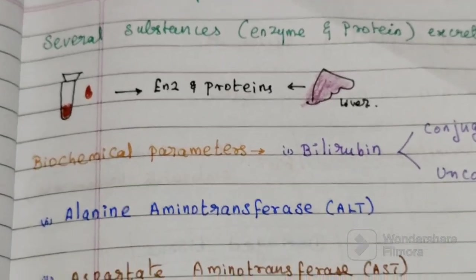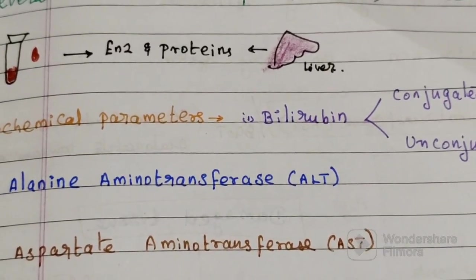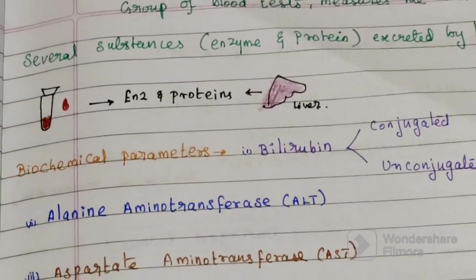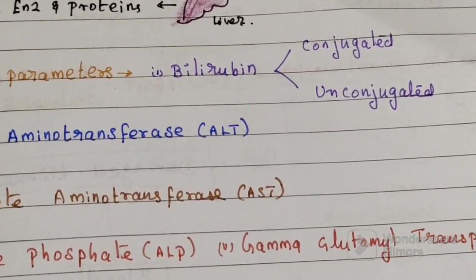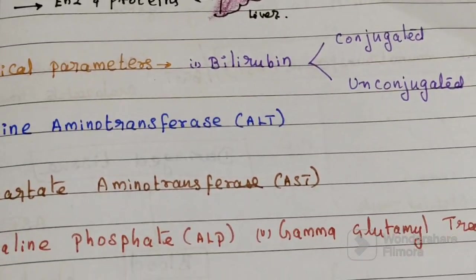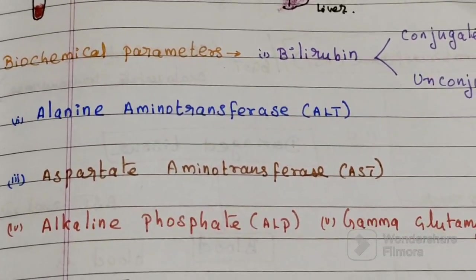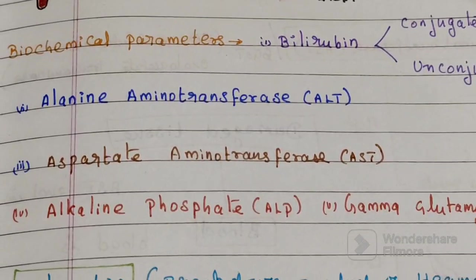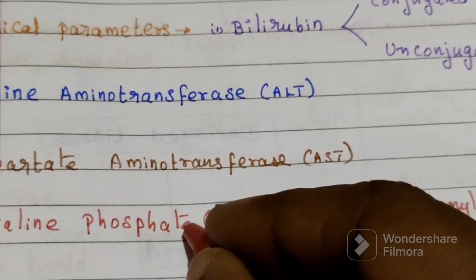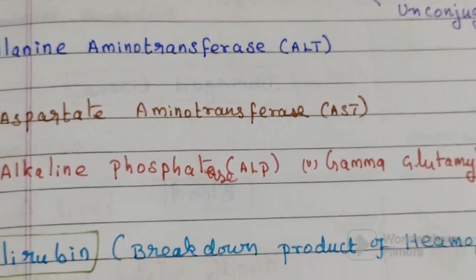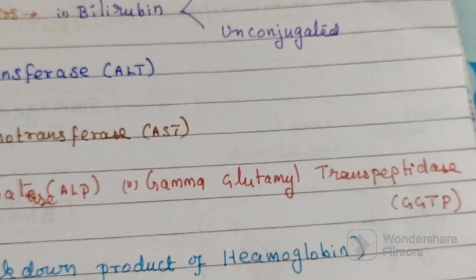Several biochemical parameters are used for assessing liver function. Five parameters are mainly used. The first one is bilirubin, which has two types: conjugated and unconjugated. The second is alanine aminotransferase. The third is aspartate aminotransferase. The fourth is alkaline phosphatase. And the fifth is gamma-glutamyl transpeptidase.